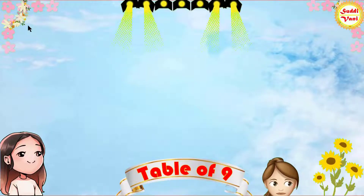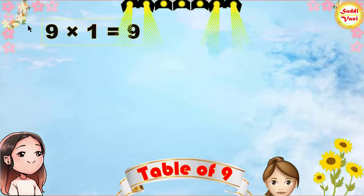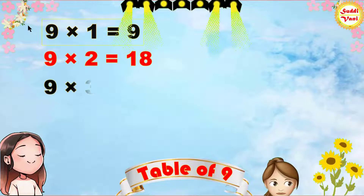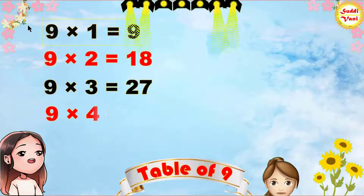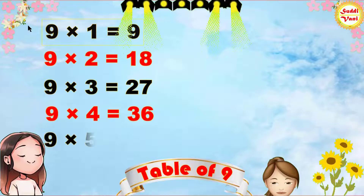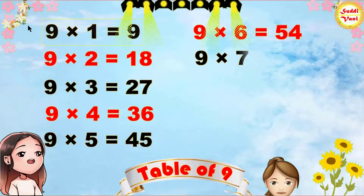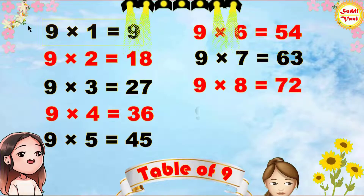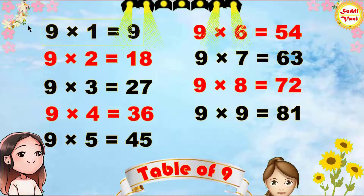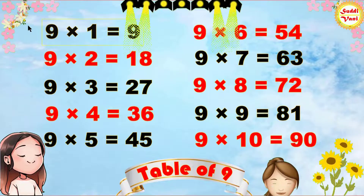Once again: 9 1s are 9, 9 2s are 18, 9 3s are 27, 9 4s are 36, 9 5s are 45, 9 6s are 54, 9 7s are 63, 9 8s are 72, 9 9s are 81, 9 10s are 90.